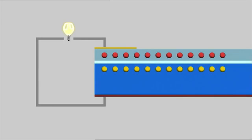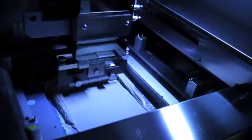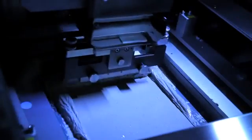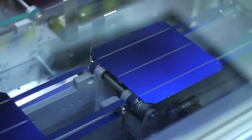But how is the power that is generated in the individual cells transported? A stamp presses a silver alloy onto the front of the cells, creating the typical grid pattern. This silver coating ensures that the power can be transported later on.